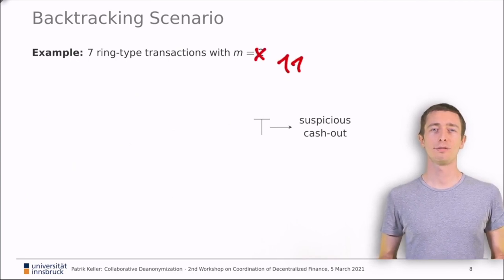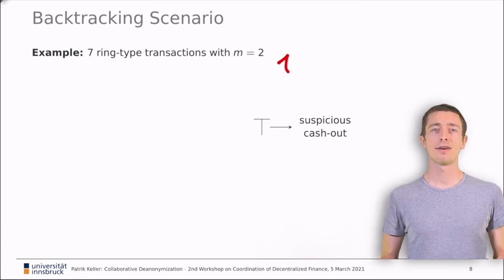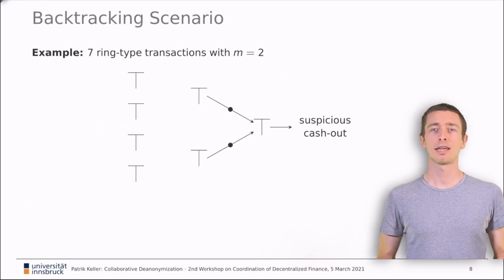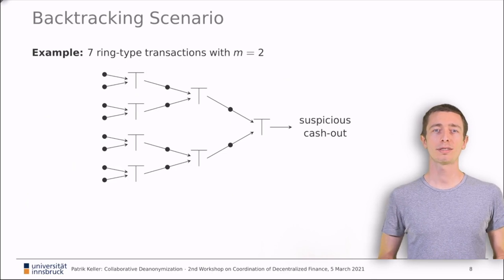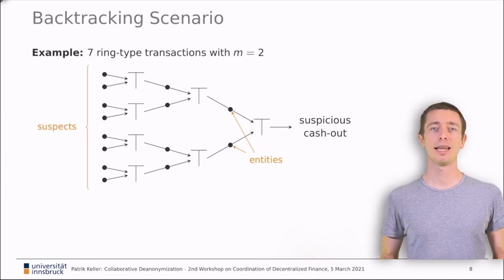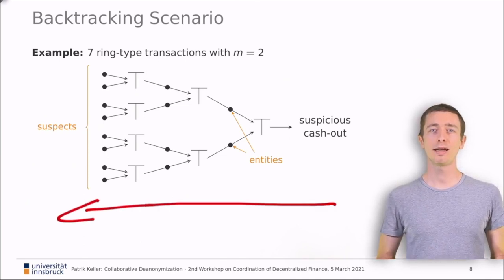So, one of these transactions gives you an anonymity set size of M equals 2. For a criminal, this is probably not enough. Thus, he cascades the transactions such that the outputs of one mix go as input into the next. This cascading causes a major problem for law enforcement. With each additional layer, the number of possible origins doubles. This means that from right to left, the suspect's anonymity set grows exponentially.